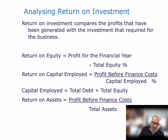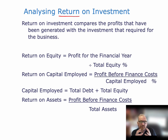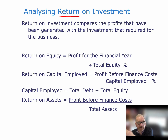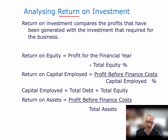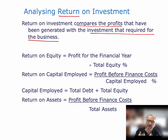Those are the profitability ratios. We now want to look at return ratios. What return ratios do is relate the information in the income statement about how much profit the firm is making to information in the balance sheet about the resources being used to make that profit. So it compares the profits generated with the investment required for that business, and we're able to look at the return that owners — and everyone who has put finance into the firm — are getting back on their investment.